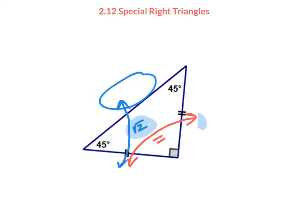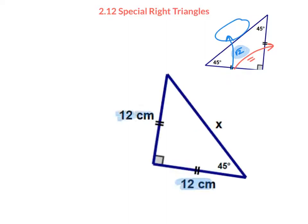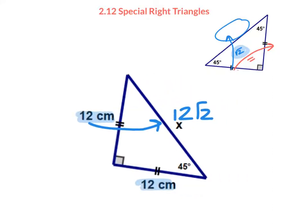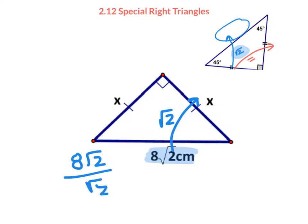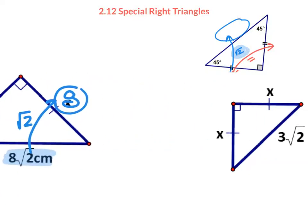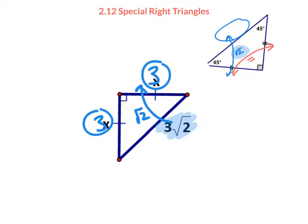Let's use that information to solve some problems. The two legs have to be equal, and we multiply by √2 to get the hypotenuse — so that would simply be 12√2. In the next case, we know the hypotenuse, so to go back to the short side we divide by √2, and we get a side of 8. Here again we're given the hypotenuse, and dividing by √2 gives us 3 and 3.